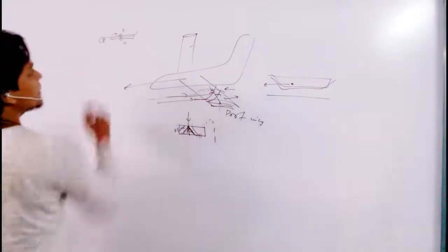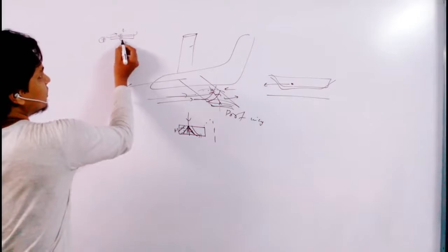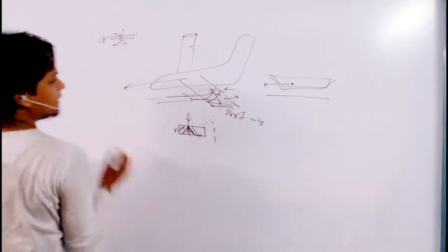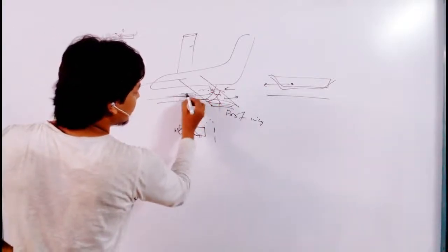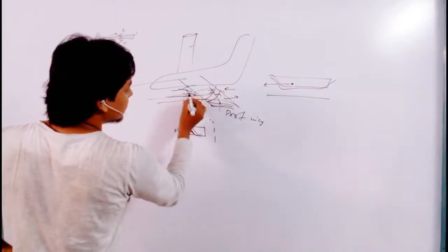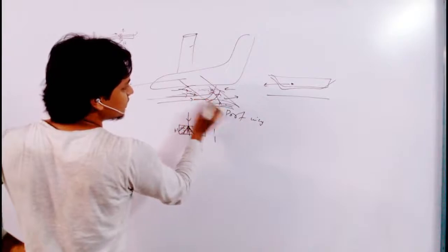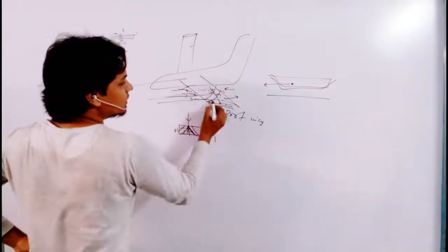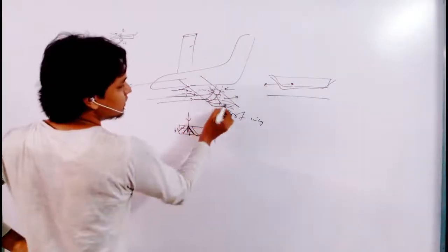On the bottom surface, pressure is more, so the flow will turn toward pressure 7 — meaning some part of the flow goes up and some goes down. The downward part turns toward the tip. So to summarize: on the upper surface, flow curls toward the root, and on the lower surface, flow curls toward the tip.